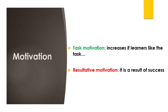The fifth type of motivation is task motivation. This type of motivation varies from task to task — it increases if the learner likes the task and decreases if they don't. The last type of motivation is resultative motivation: it is the kind of motivation learners feel after they get good grades in a test or quiz, and they suddenly feel the desire to work hard and learn more.